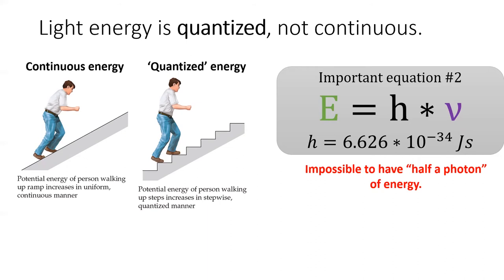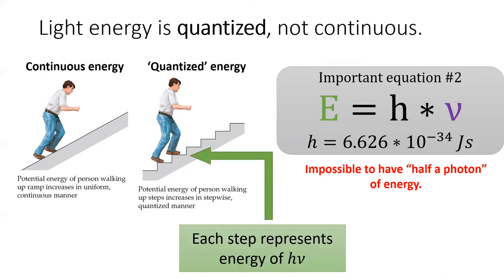Scientists say that the energy of light is quantized as opposed to continuous. If continuous energy is like climbing a ramp, then quantized energy is like climbing a flight of steps. You cannot be halfway between one step and another step. Each step represents an amount of energy equal to h nu.